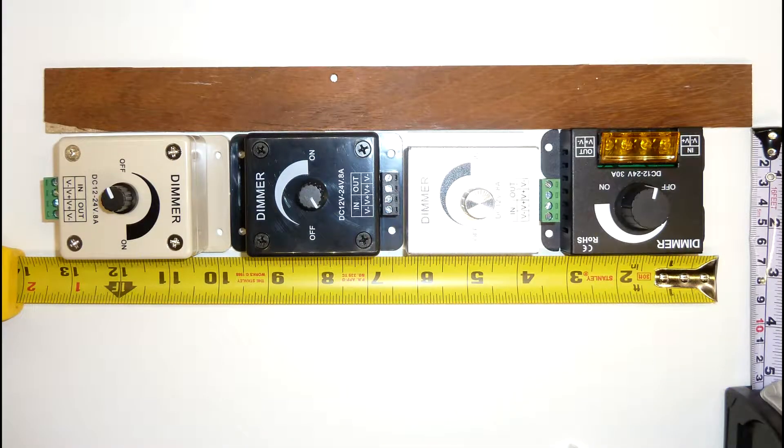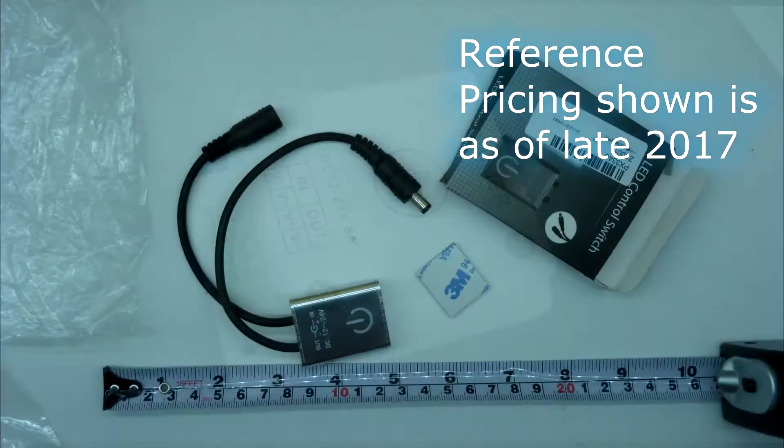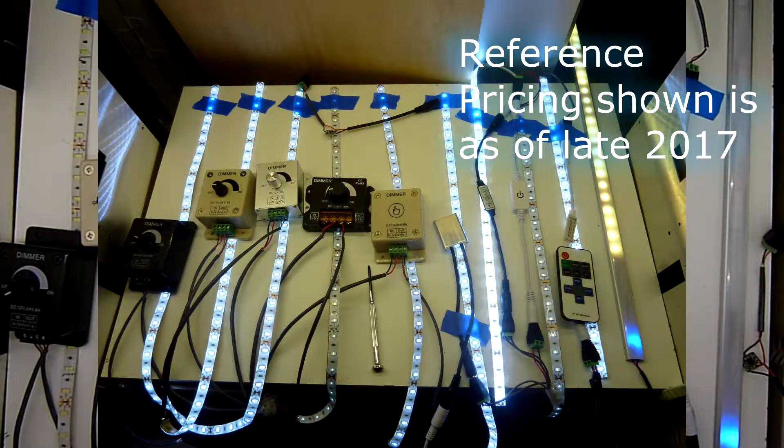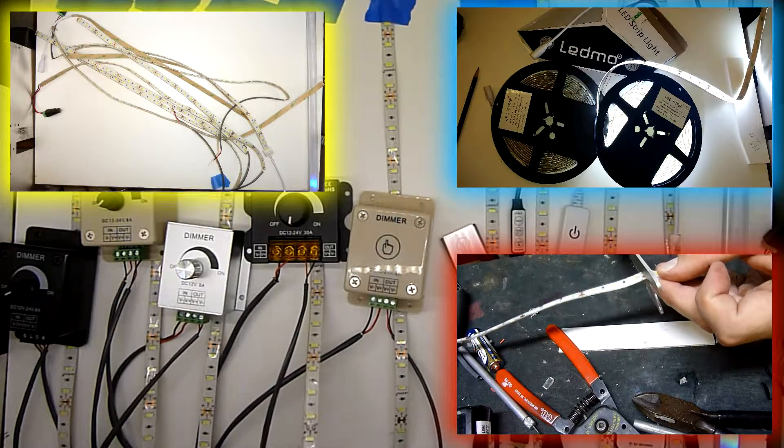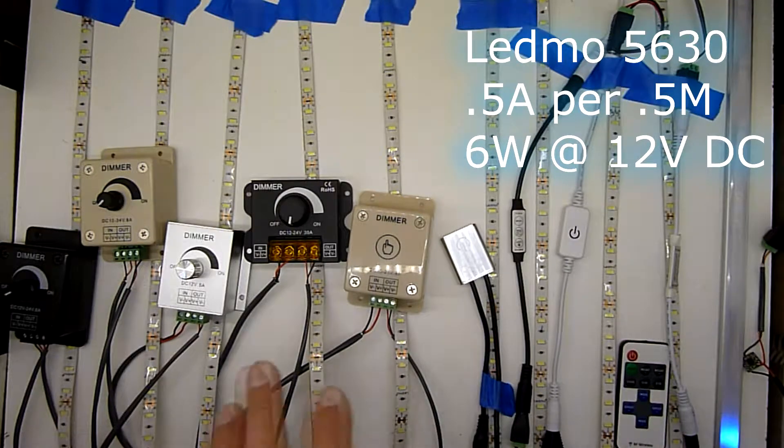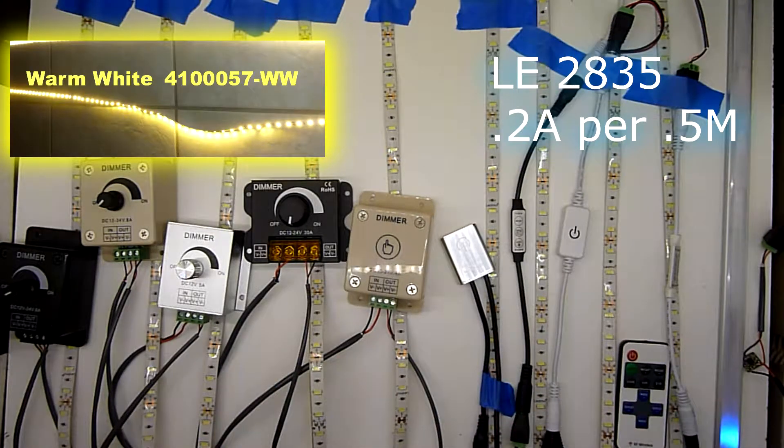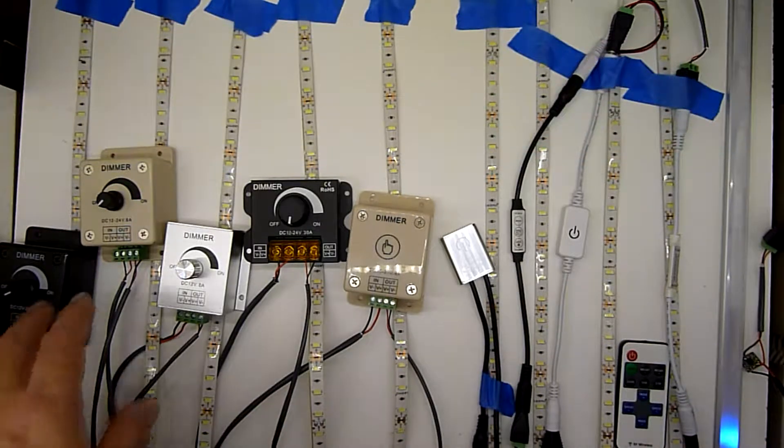None of them are UL listed and none of them are waterproof. I have both mechanical models and touch here. For this test I've cut a half meter of Lead Mode 5630 daylight white, rated at half amp per half meter. I also have over here on the right a piece of LE2035 for one lamp. Let's get started.